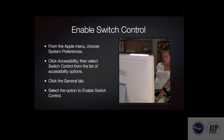Here are the steps to access Switch Control, which are also in your handout. It's pretty easy. You go to your Apple menu, choose System Preferences, and it's under the Accessibility tab. You'll be able to see Switch Control and turn it on or off from that spot.